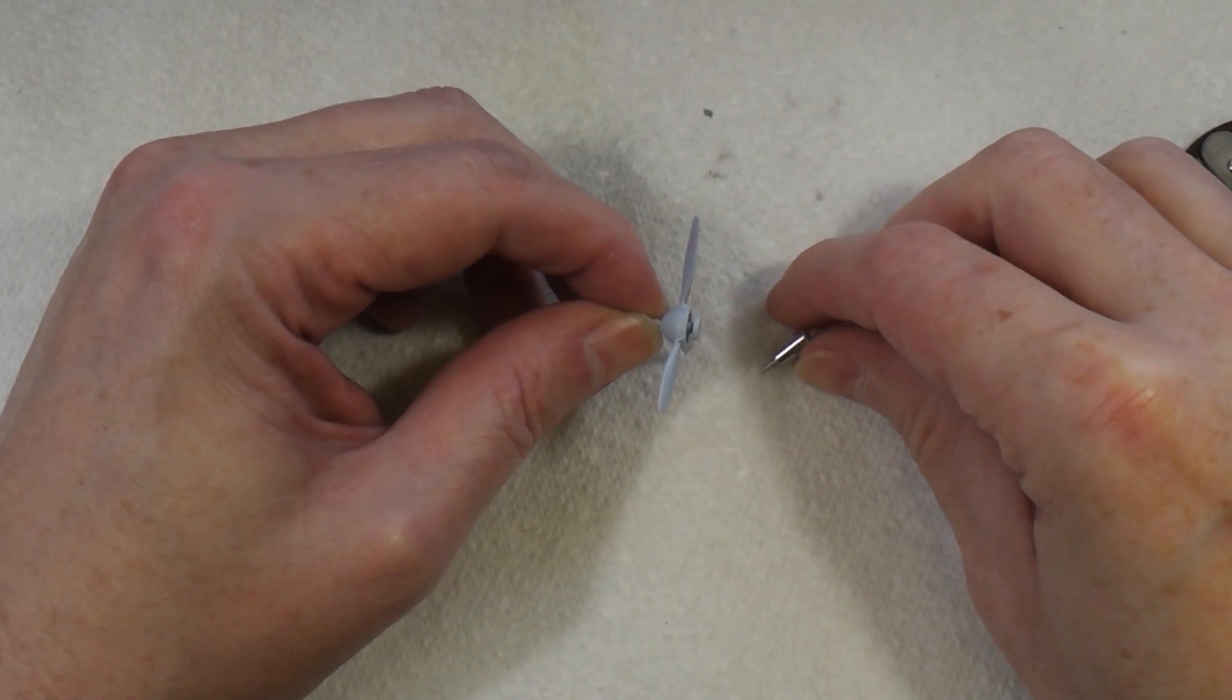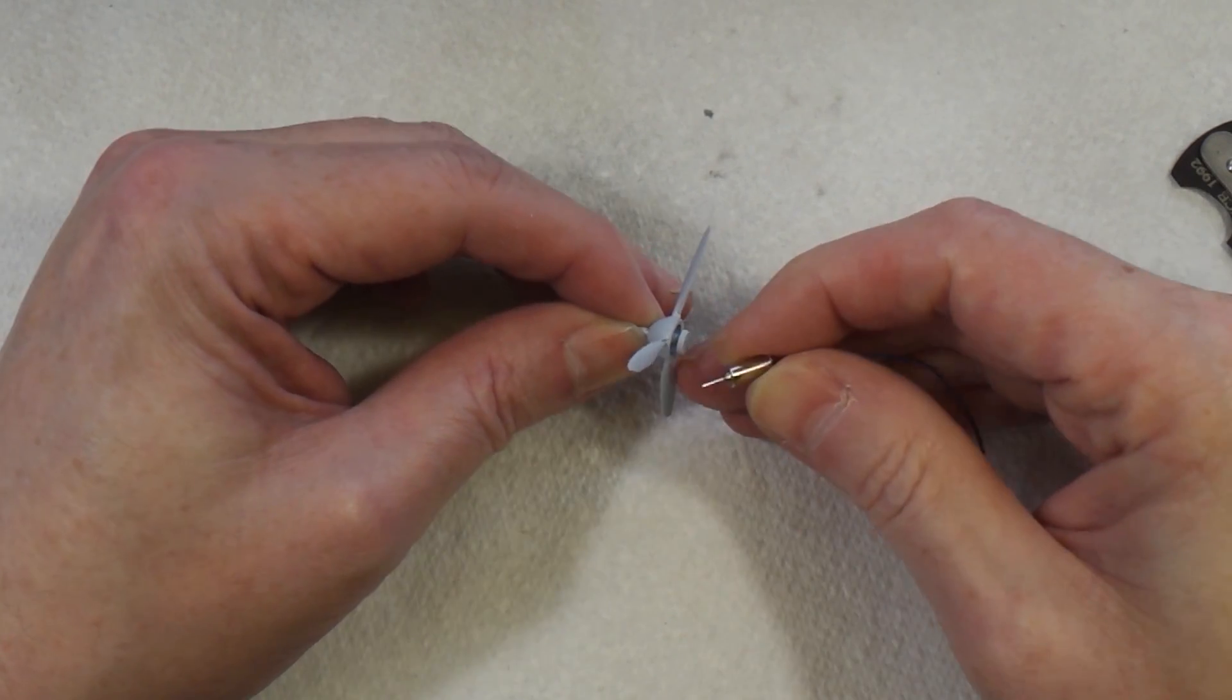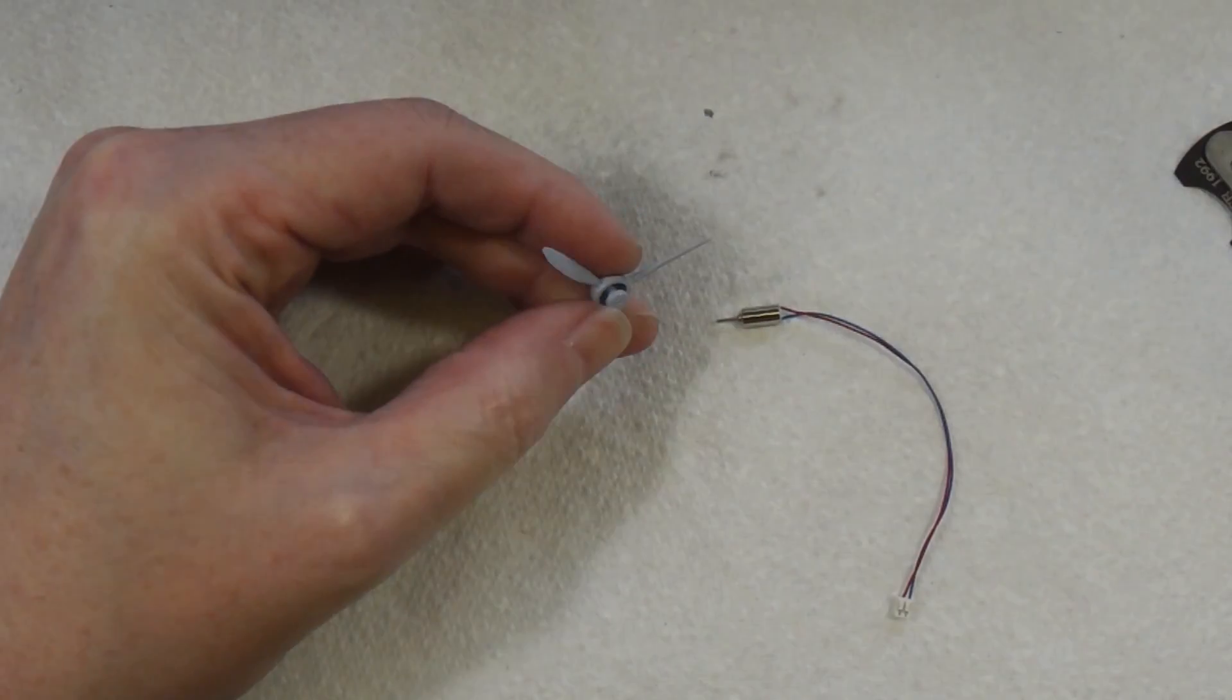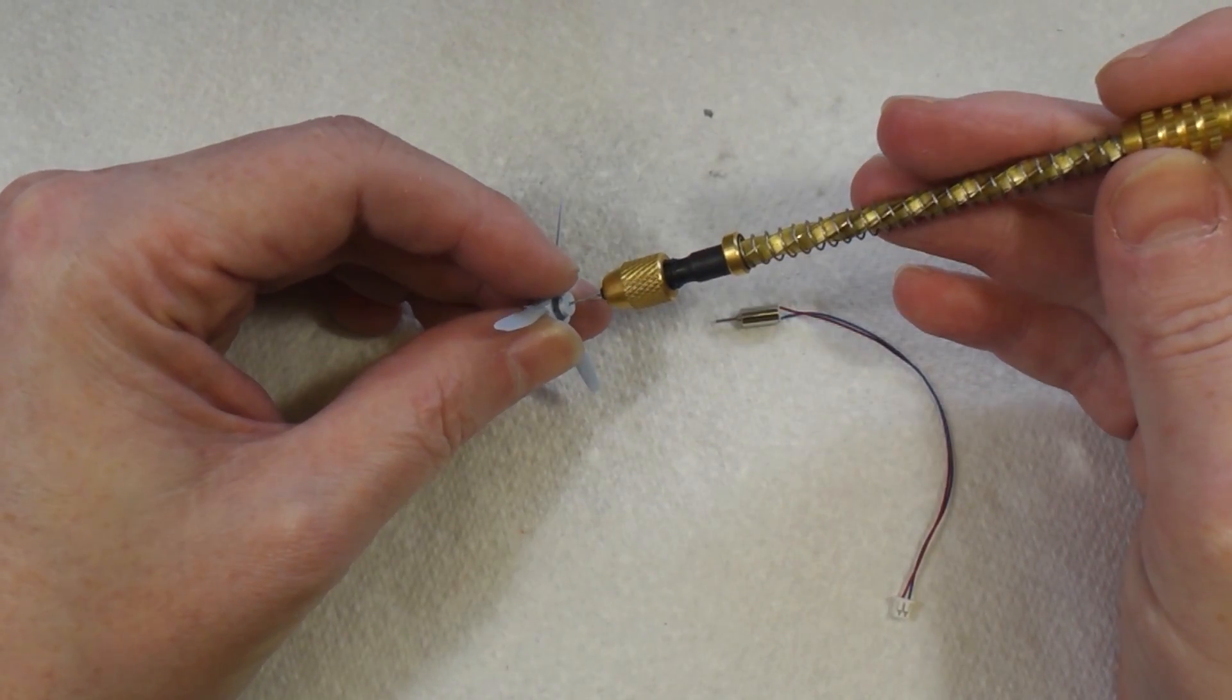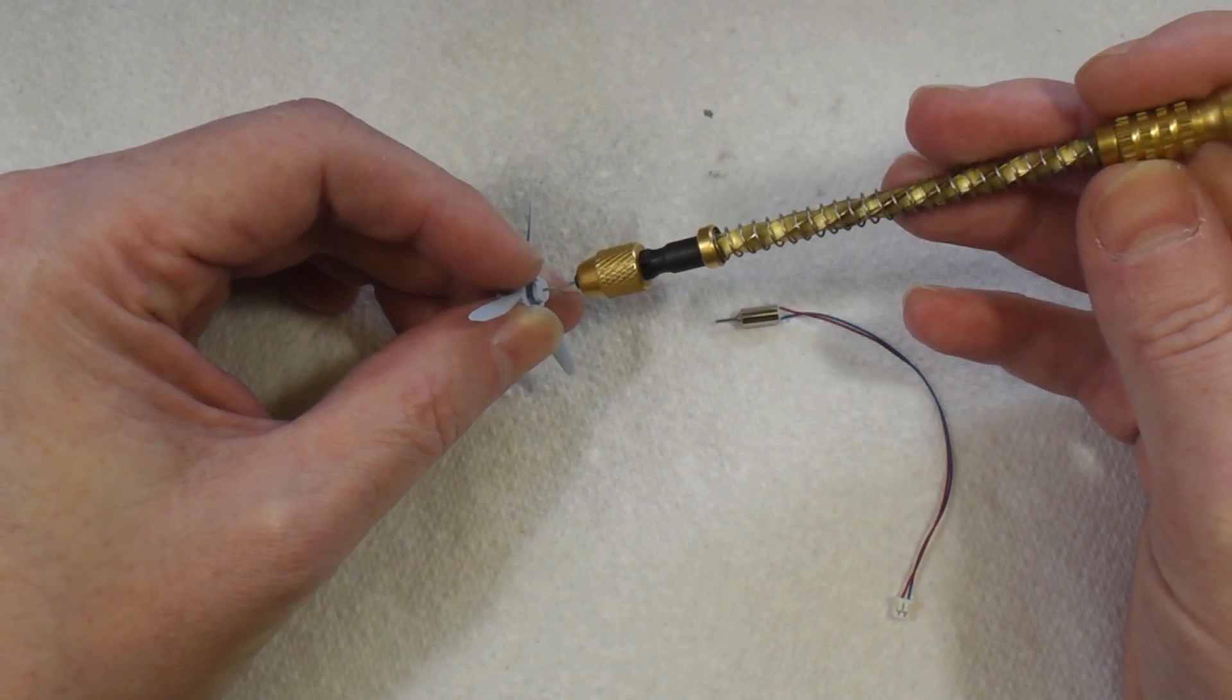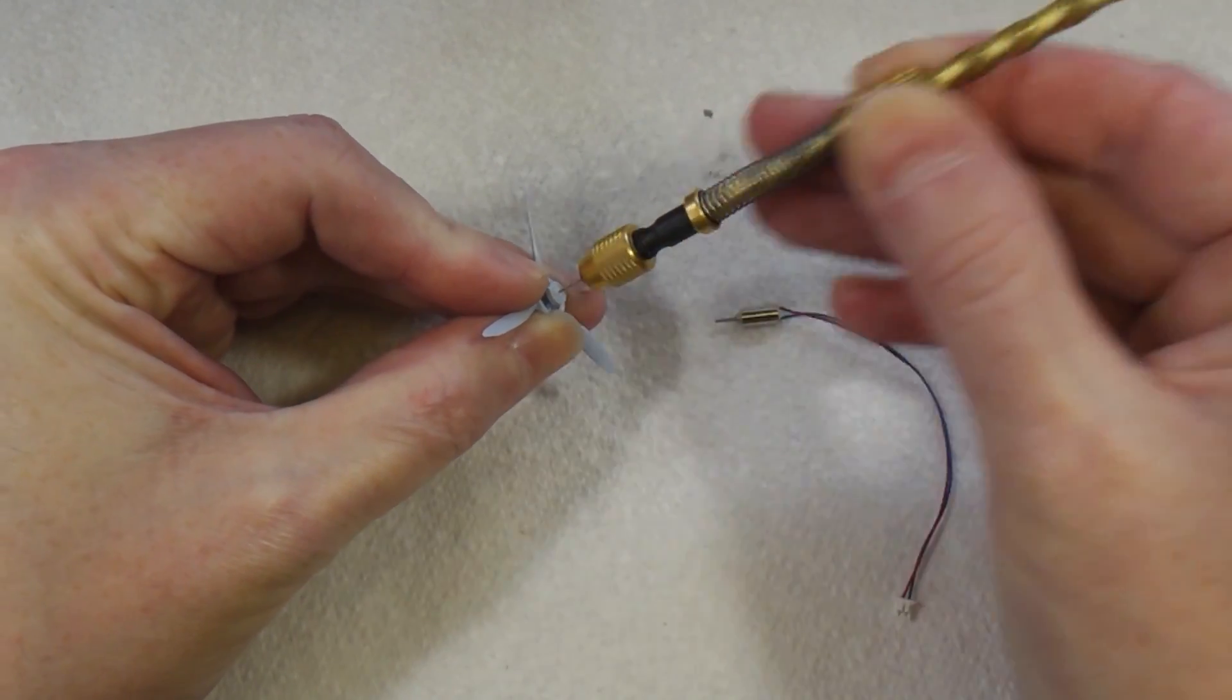Now what I need to do is drill a hole in this for the shaft of the motor to go in. This pin vise is an Archimedes screw - I get asked about this a lot. You can buy them on eBay or Amazon, they're quite cheap. It's got a 0.5 millimeter drill bit in it.